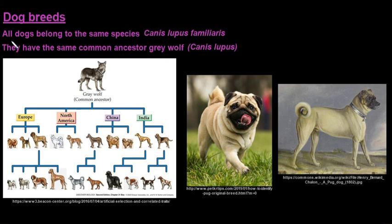And then lastly, another example is dog breeds, the dog breeds that we have today. So all dogs belong to the same species, Canis lupus familiaris, and they all share one common ancestor, which is the gray wolf, Canis lupus, and all of the dog breeds that we have today came from the gray wolf.